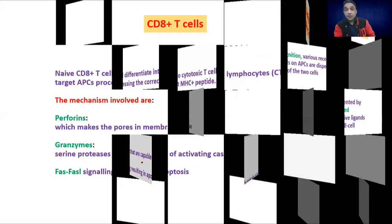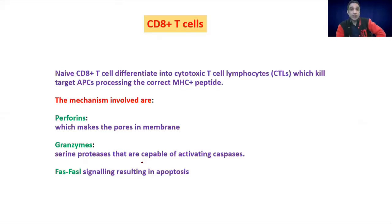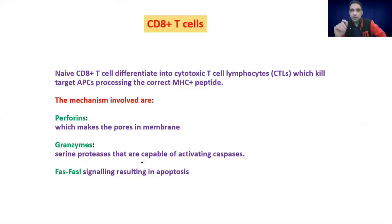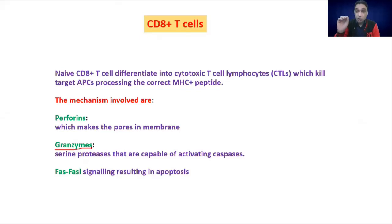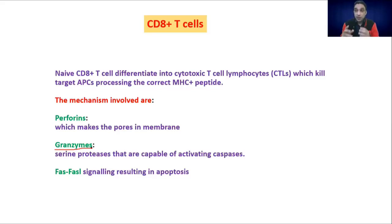When CD8 cells get activated, they produce perforins — chemicals that create pores or breach the cell membrane. They also produce granzymes, which are serine proteases capable of breaking down protein molecules. Granzymes are capable of activating caspases. Caspases are cell killers — proteases present in our cells as well. If the caspases in our cells get activated, that is essentially a death sentence for that cell.